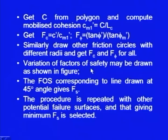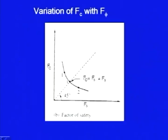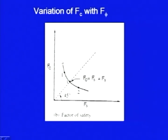Now, the variation of factor of safety may be drawn as shown in this figure. It is F_φ and F_c. It is natural that when F_φ is low, you need higher F_c, and when F_φ is high, you need lower F_c to keep the wedge in equilibrium. Draw these points and join them by a smooth curve. Then the factor of safety against shear strength is defined as that factor of safety where F_c and F_φ are both equal, and it is defined as equal to F_s.